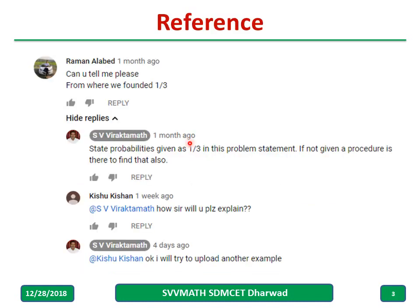And this is the question. State probability is given as 1 by 3. If it is not given, how to find out?